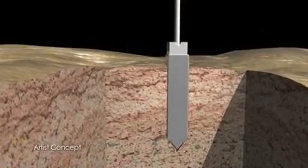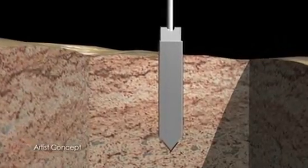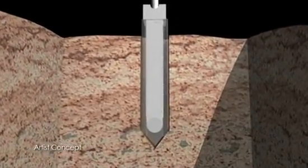As the harpoon penetrates into the comet, it fills its inner sample cartridge with subsurface material as it goes deeper.